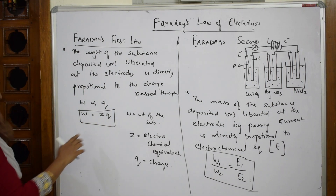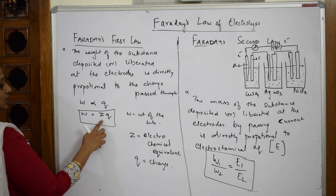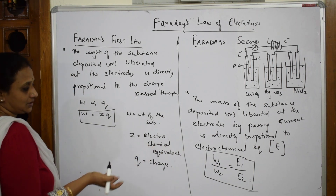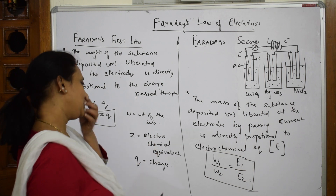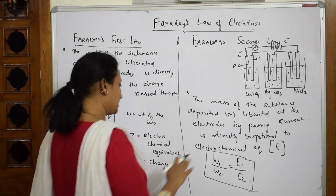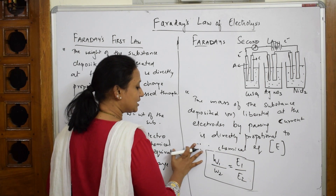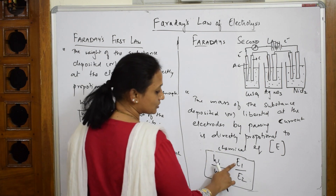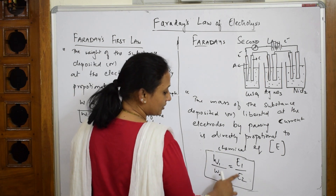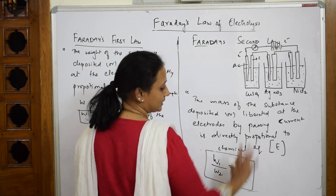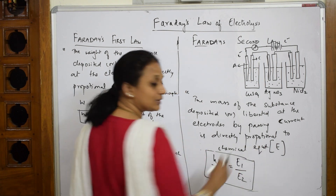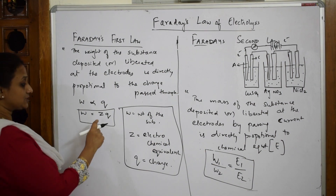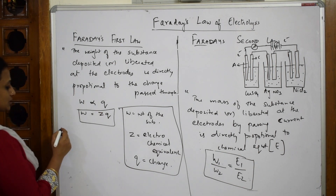Now let us define these terms. To avoid confusion, let's use 'chemical equivalent weight' rather than electrochemical equivalent here in the second law. So the weight is directly proportional to the chemical equivalent weight. This is very precise.